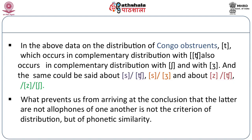Thus the notion of complementary distribution is not going to be very helpful for us. How do we decide that /tʃa/ is the allophone of /ta/ and not /ʃa/? The notion that plays a crucial role here is that of phonetic similarity.